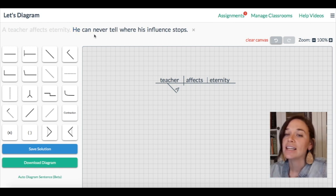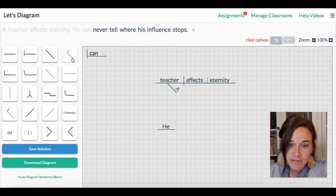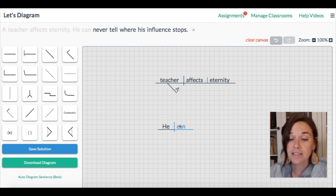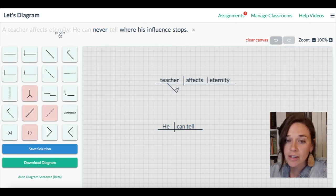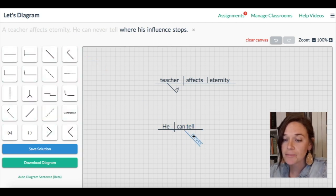Okay, the next sentence is he can never tell where his influence stops. He is the subject of this sentence. Can is a verb, and it's actually a helping verb in a verb phrase, so there's another word functioning as the main verb. It's not this next word, it's not never, it's this word tell. He can tell. Never is an adverb modifying these verbs here, so we stick it right under the verb that it's modifying.